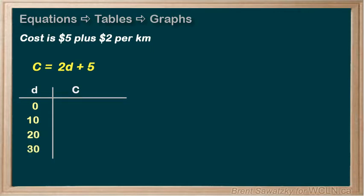And that should be enough to build a good table. Now, we have to figure out the costs for each of these. We already learned how to evaluate an expression, so we can just push ahead here. Replace the variable with brackets, and in the first row, we put a 0 into the brackets. And 2 times 0 is 0, and then add the 5, and we have a cost of $5.